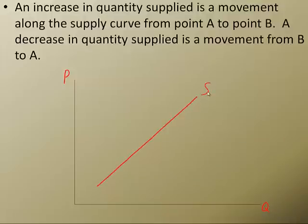It says an increase in quantity supplied is a movement along the supply curve from point A, let's call this A, to point B. Alright, and I'm going to put B right here. Now the quantity associated with point A is this QA right here. And the quantity associated with B is this QB right here.